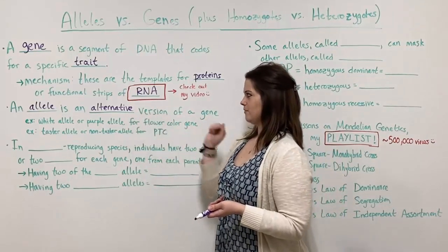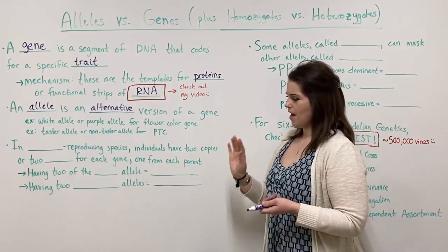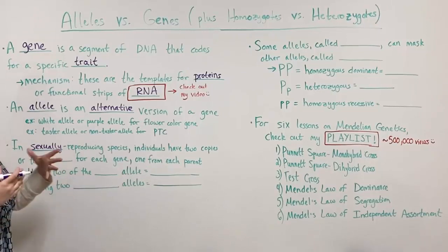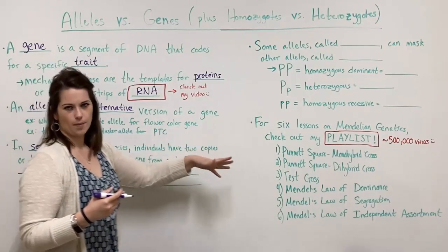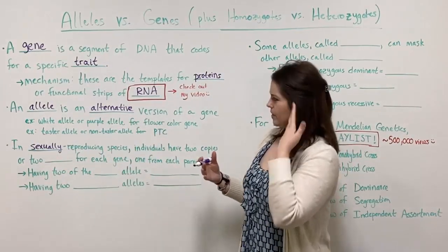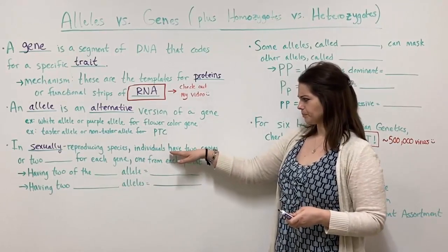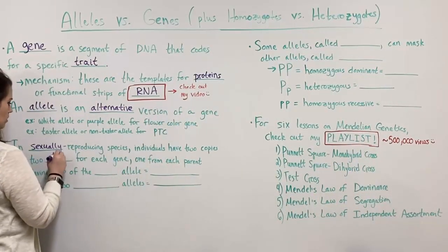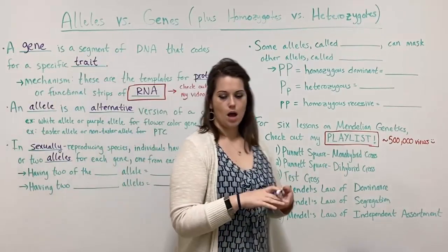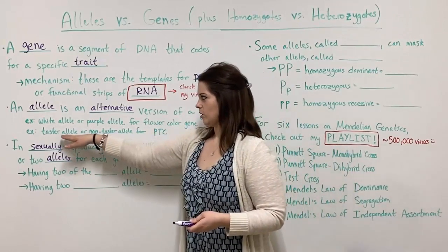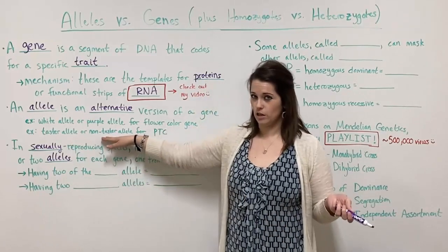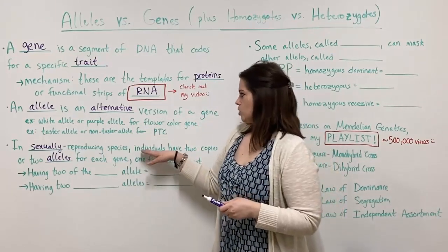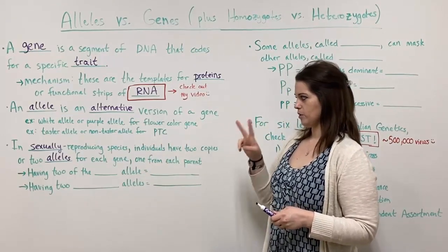In sexually reproducing species like humans, individuals usually have two copies — two alleles for each gene, one from each parent. Some plants can get more than two copies, but generally for humans and other animals it's two. Going back to the PTC example, a person can get a taster allele from both parents, a non-taster allele from both parents, or a taster allele from one parent and a non-taster allele from the other.